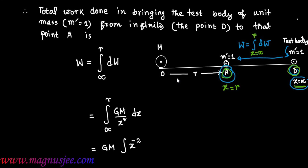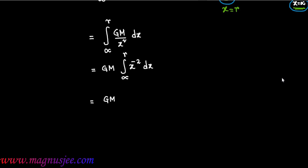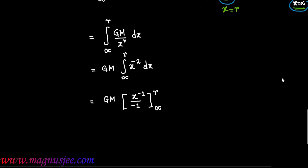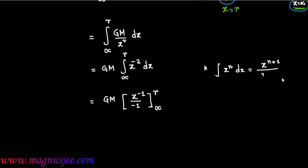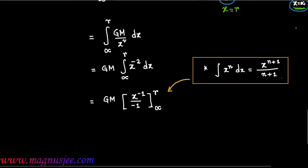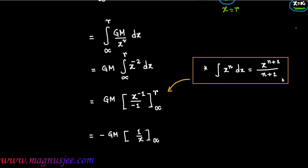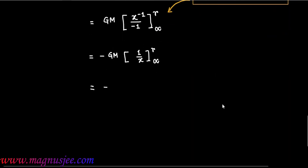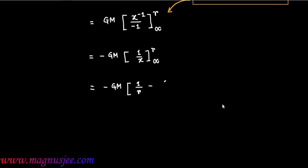Using the formula integration of x to the power n dx equal x to the power n plus 1 divided by n plus 1, we get W equal GM times x to the power minus 1 by minus 1, evaluated from infinity to r. Bringing minus 1 outside the bracket gives minus GM times 1 by r minus 1 by infinity. Since 1 by infinity equals zero, therefore W equal minus GM by small r.